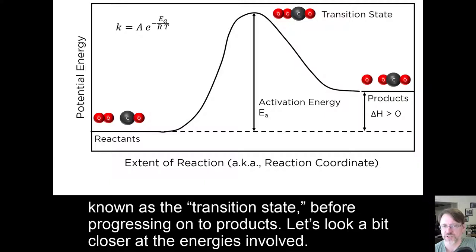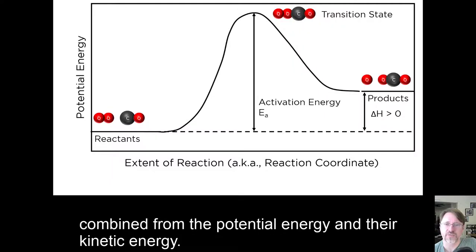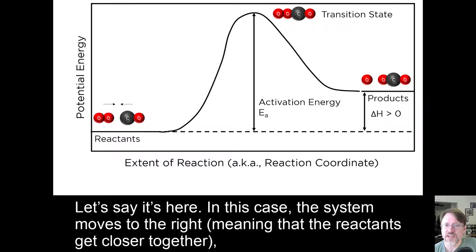Let's look a bit closer at the energies involved. In a bimolecular collision like the one we've been discussing, the reacting pair have a certain amount of energy combined from the potential energy and their kinetic energy. And because of the conservation of energy principle, that total amount of energy is constant. Let's say it's here.